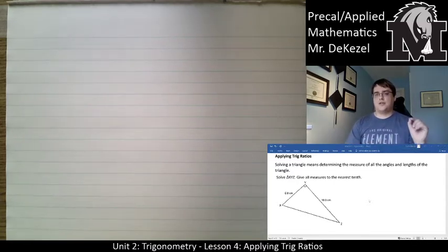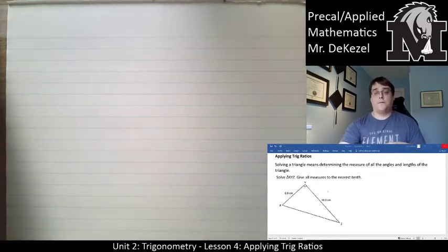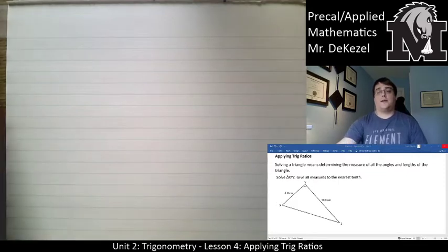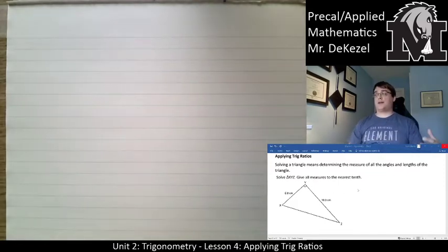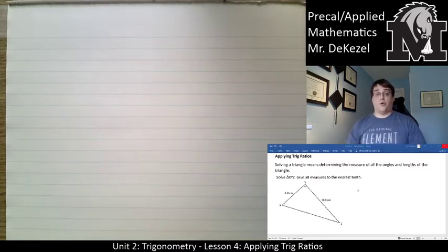Whenever the question says solve a triangle, that means that it wants you to calculate all of the other angles and sides that have not already been shown. So usually that's going to be requiring you to do three things. Either find two angles and a side, or to find two sides and an angle, or some combination thereof.